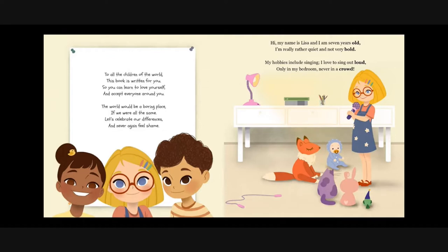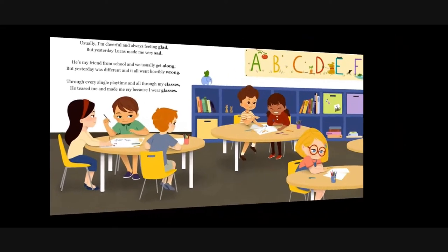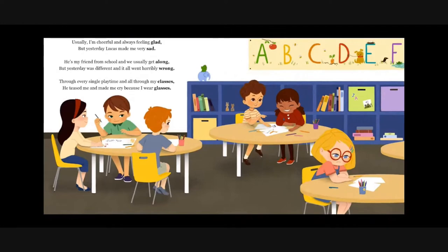Hi, my name is Lisa and I am seven years old. I'm really rather quiet and not very bold. My hobbies include singing. I love to sing out loud, only in my bedroom, never in a crowd. Usually I'm cheerful and always feeling glad, but yesterday Lucas made me very, very sad. He's my friend from school and we usually get along, but yesterday was different and it all went horribly wrong. Through every single playtime and through all my classes, he teased me and made me cry because I wear glasses.